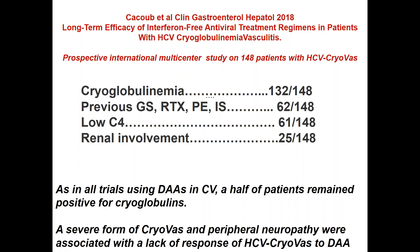In what may be the most important paper published in this field, 148 patients with HCV cryoglobulinemic vasculitis were included in a multicenter study. Cryoglobulinemia was detected in the majority but not all patients, and one third had previously been treated with other drugs. Low C4 — which is usually observed in every patient with mixed cryoglobulinemia — was present in only one third of this cohort. Renal involvement was present in 25 out of 148 patients, and there is no evidence of a single renal biopsy in this paper.